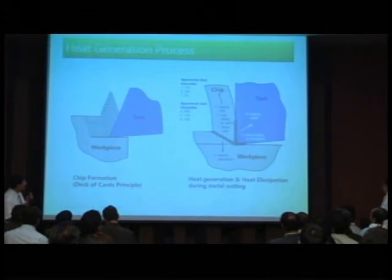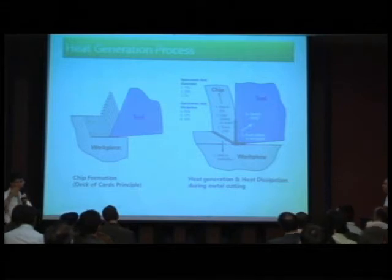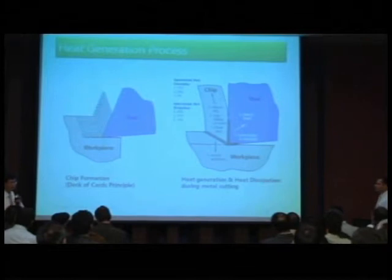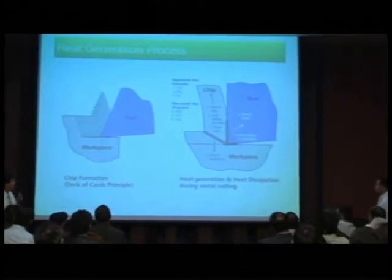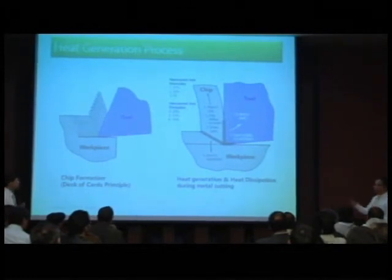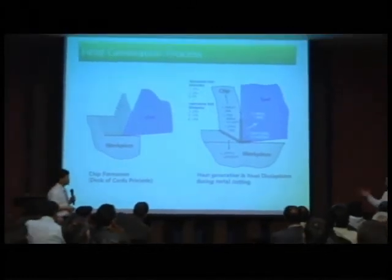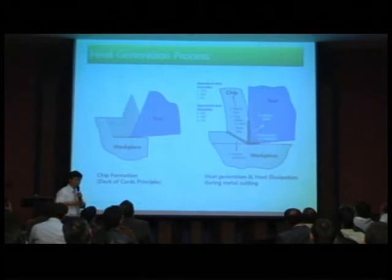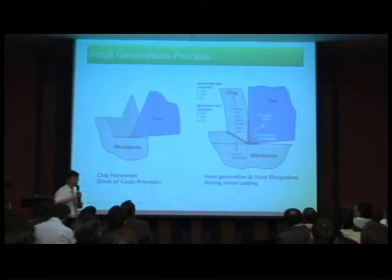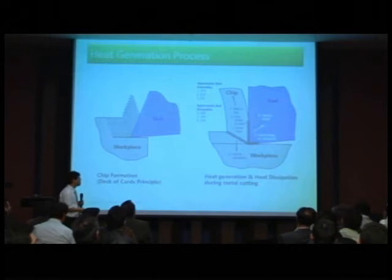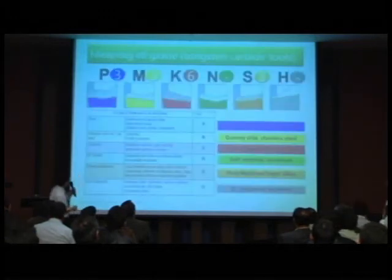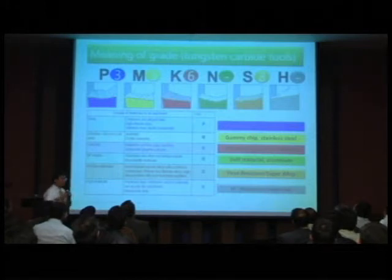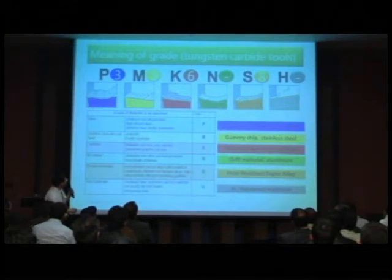Next is about cutting tools. There is significant heat generation, so we need many different types of grades to address that heat generation. We need different types of tungsten carbide tools depending on heat generation. This is a kind of guide for where and how to use tungsten carbide tools.